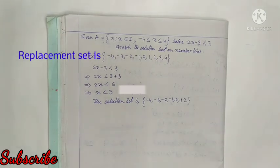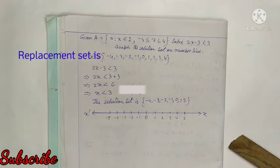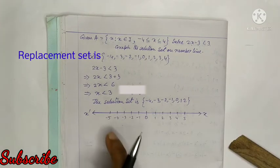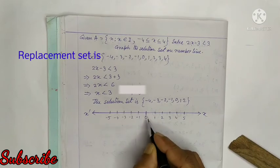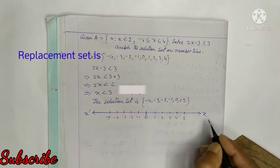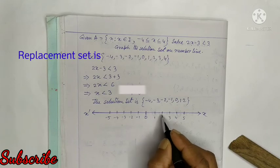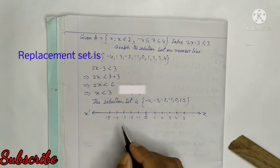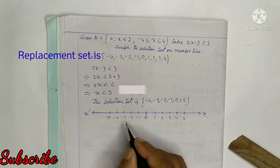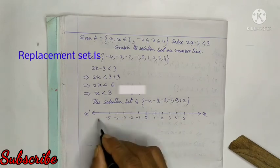Now graph the solution on the number line. I draw a number line with 0 at center, marking positive integers 1, 2, 3, 4, 5 to the right and negative integers minus 1, minus 2, minus 3, minus 4 to the left. The solution set from minus 4 up to 2 is highlighted on the number line.